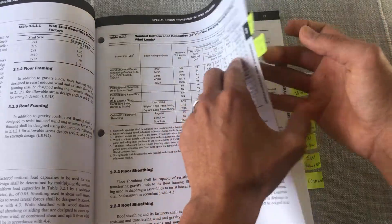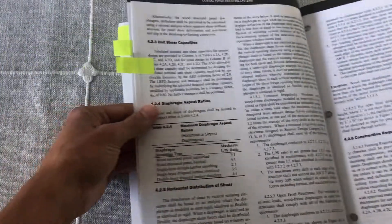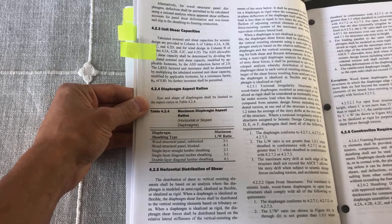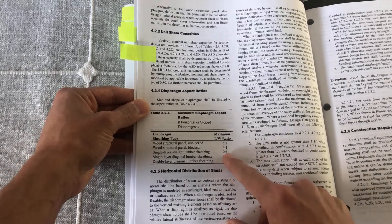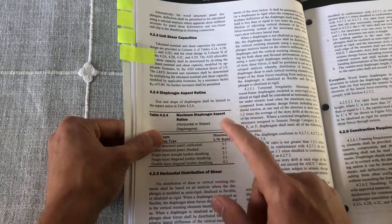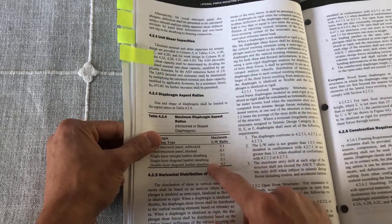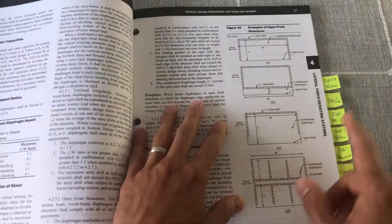So the maximum diaphragm aspect ratio is on this tab here, which we can see for all the different sheathing types. And we're going to have a similar one for shear walls as well, and we'll get there in a second.